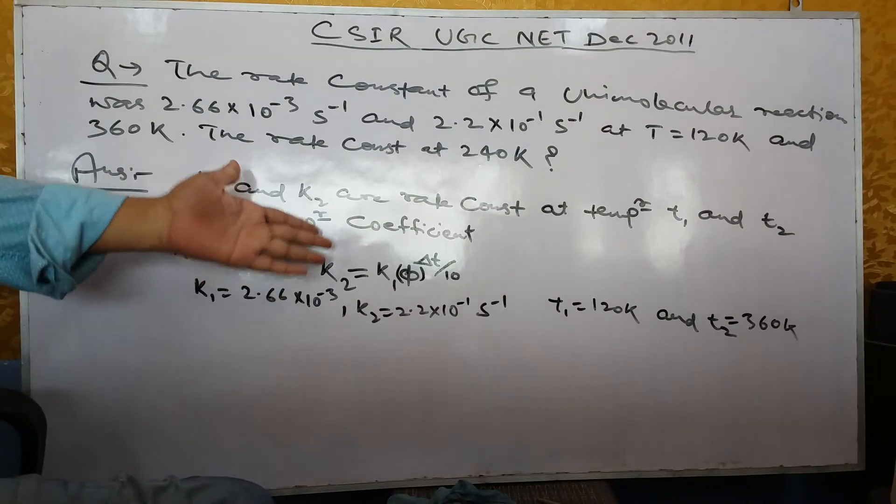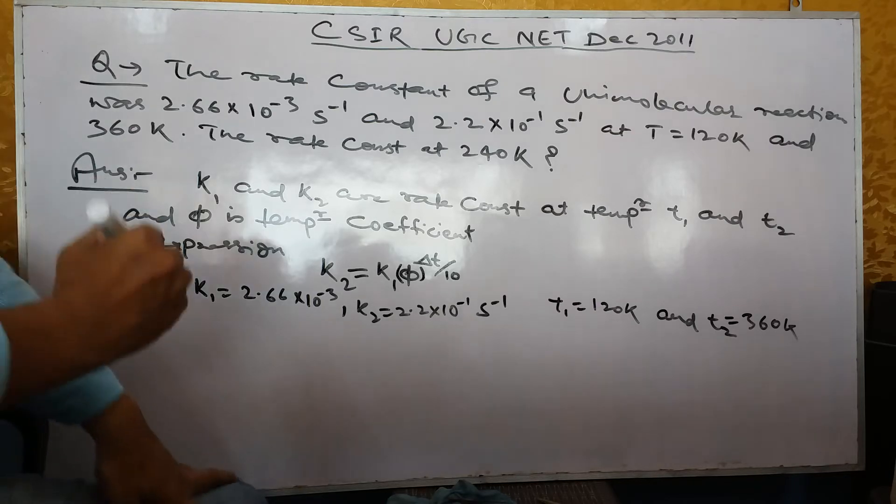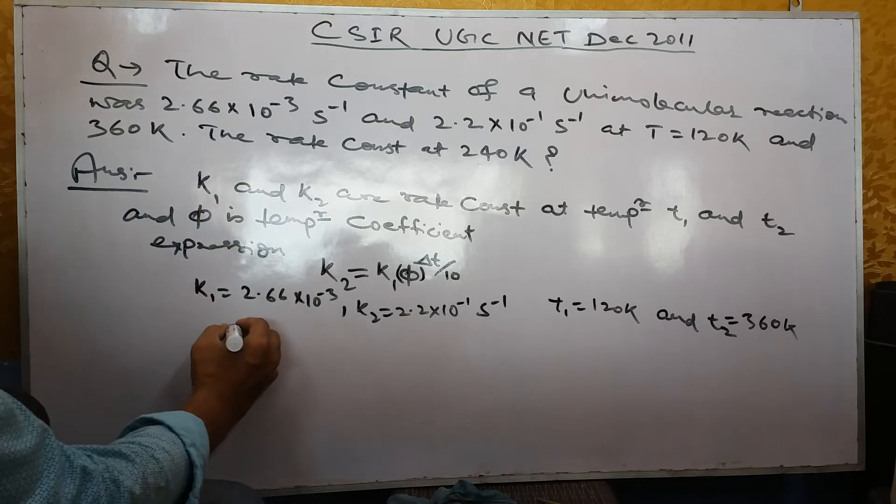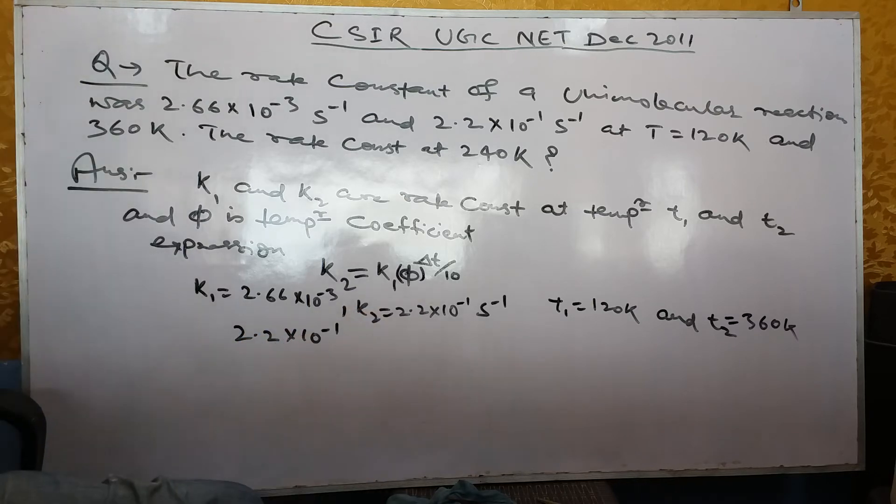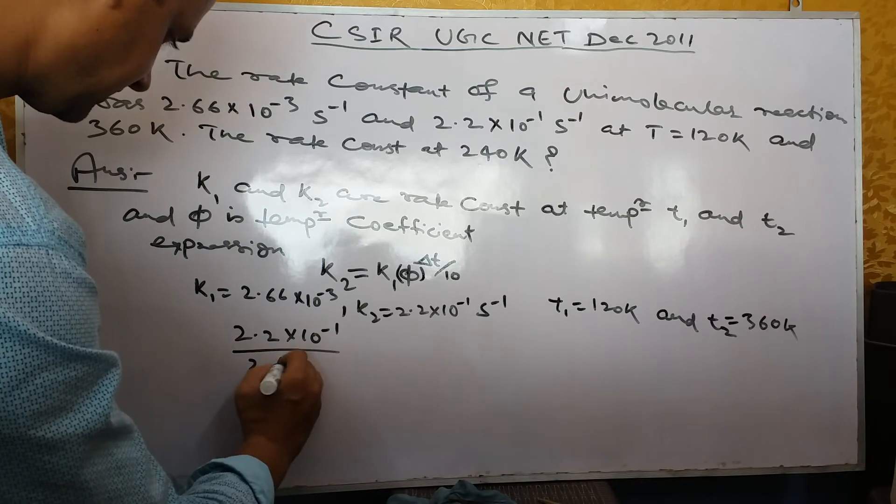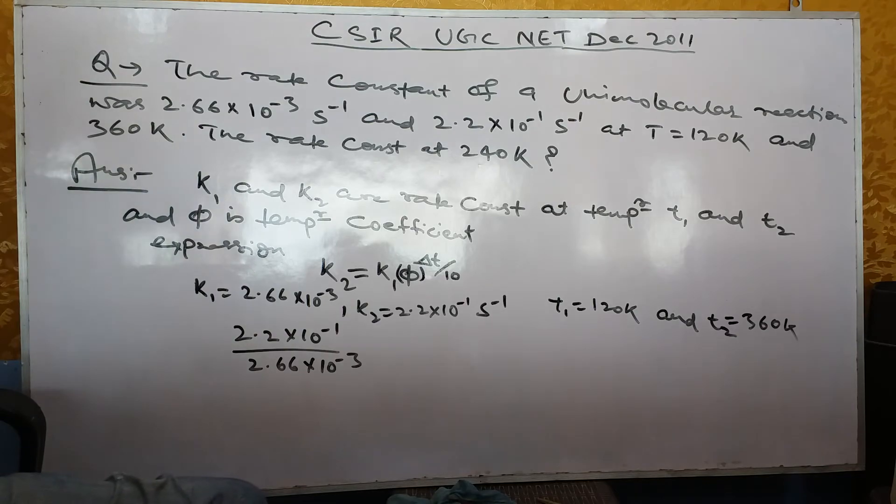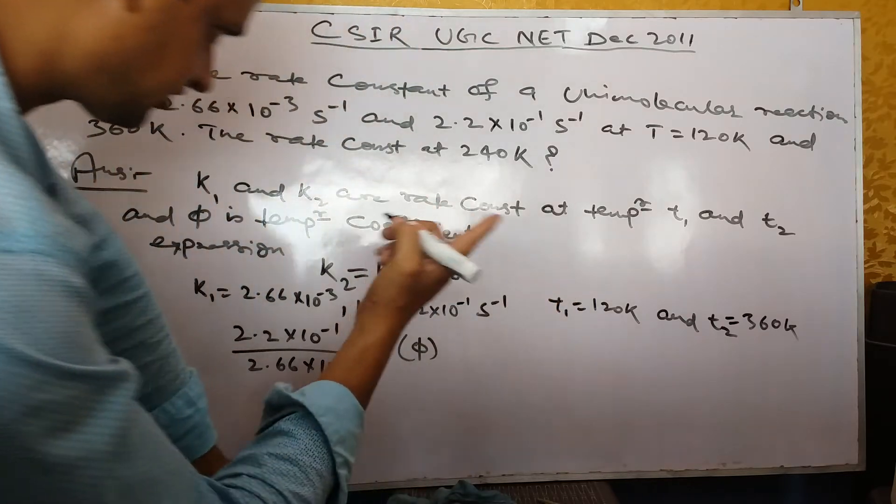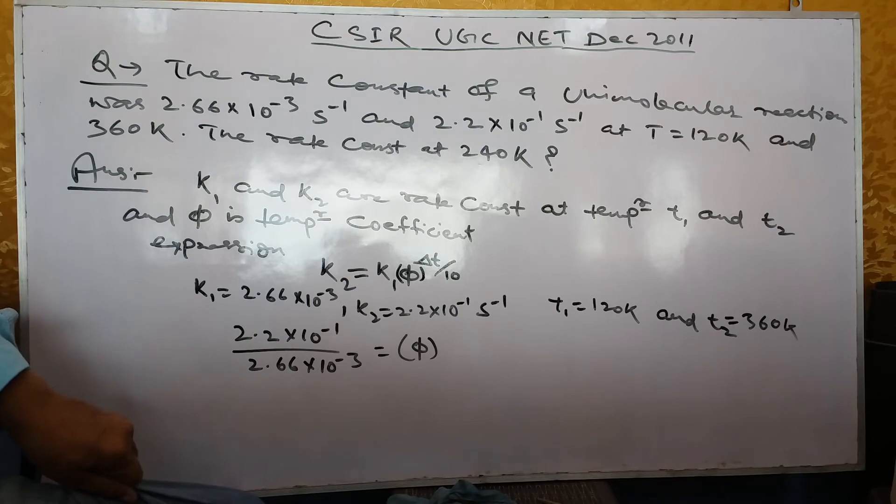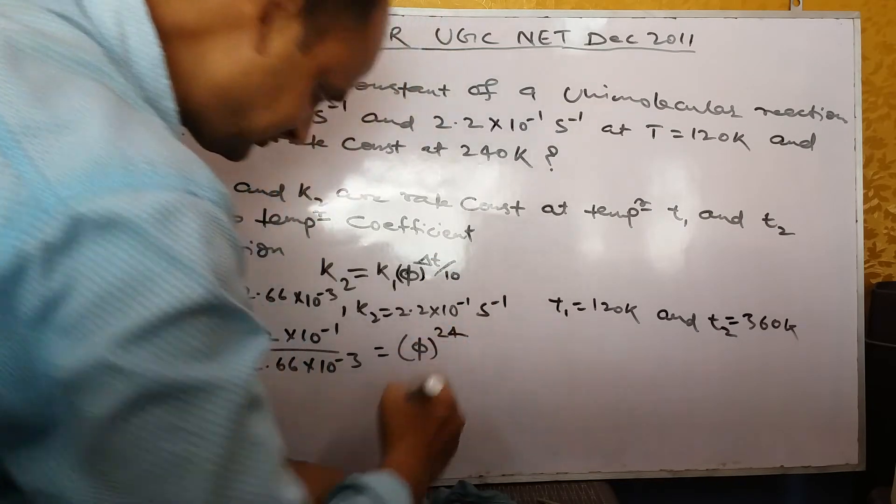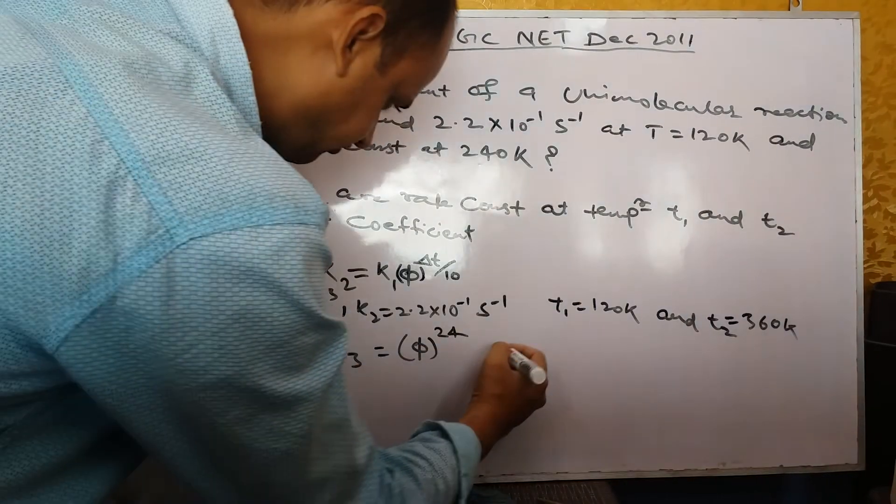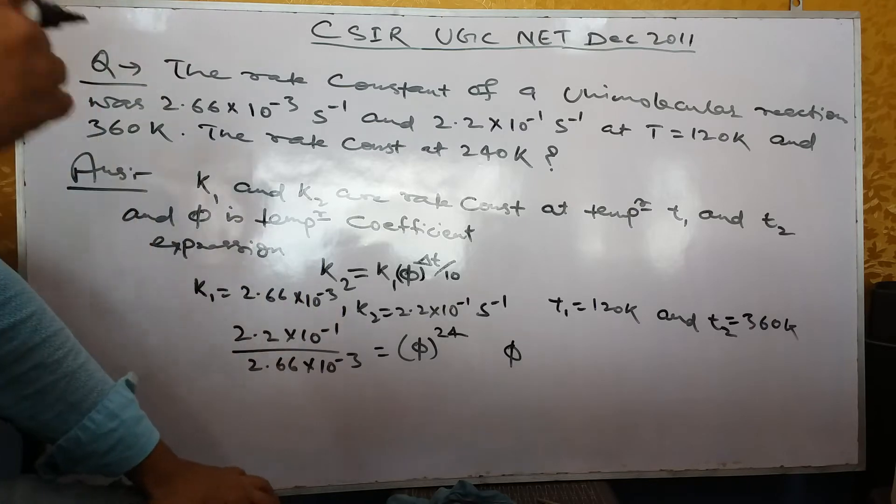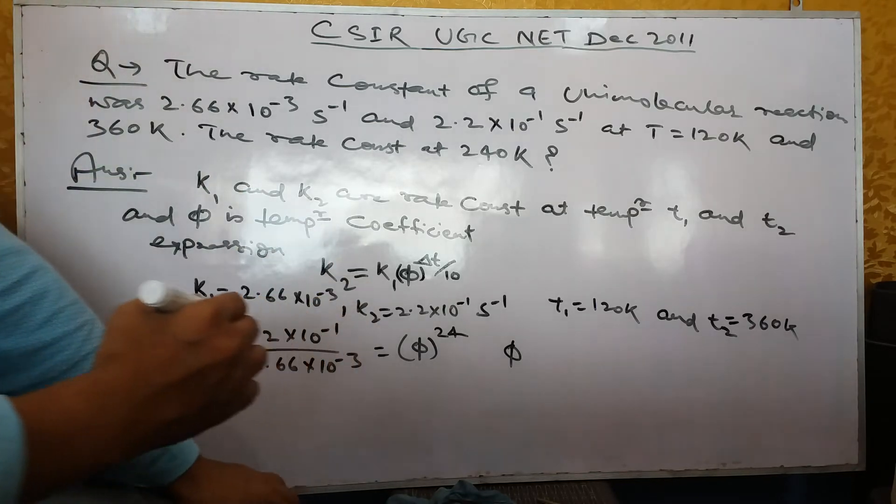Put these values in this expression. K2/K1, that means 2.2 × 10^-1 divided by 2.66 × 10^-3, equals φ to the power of temperature difference divided by 10, which equals 24. From this data, the φ value will come to 1.2.